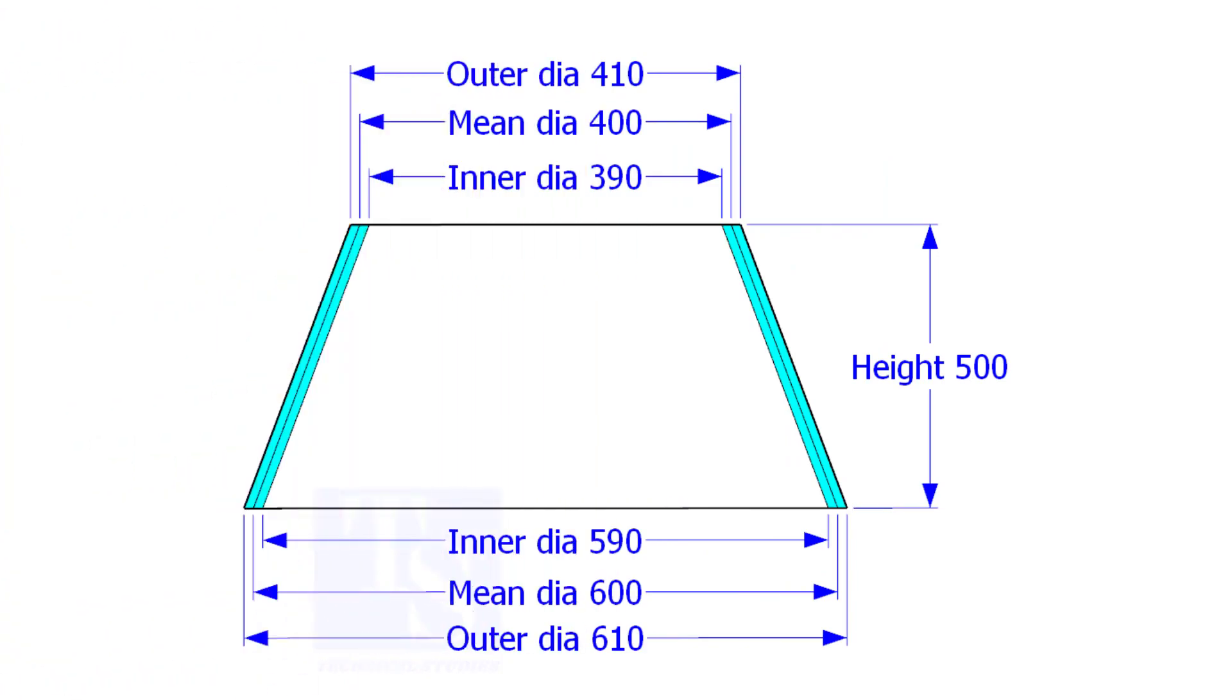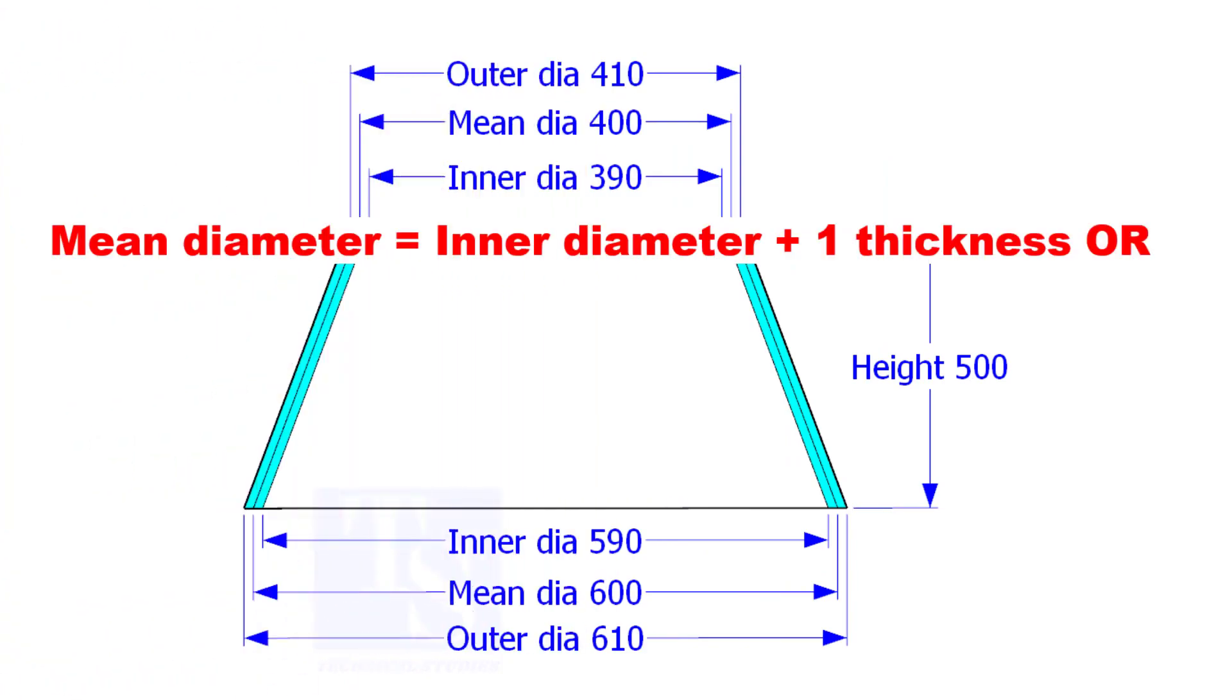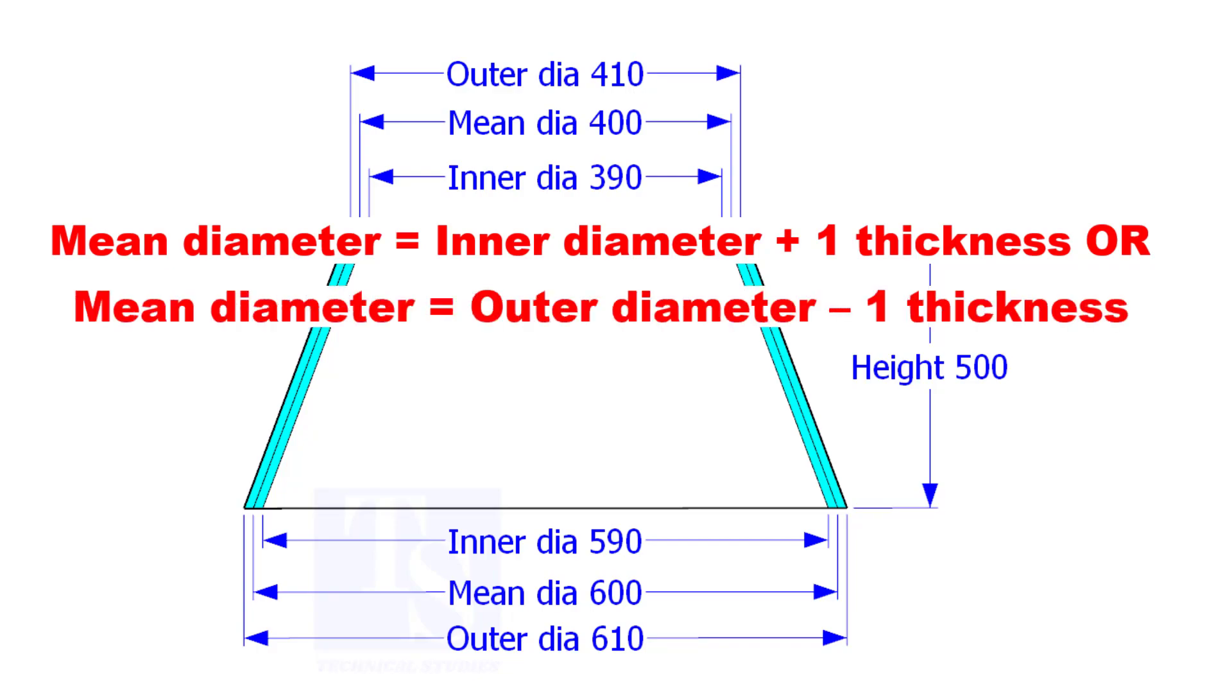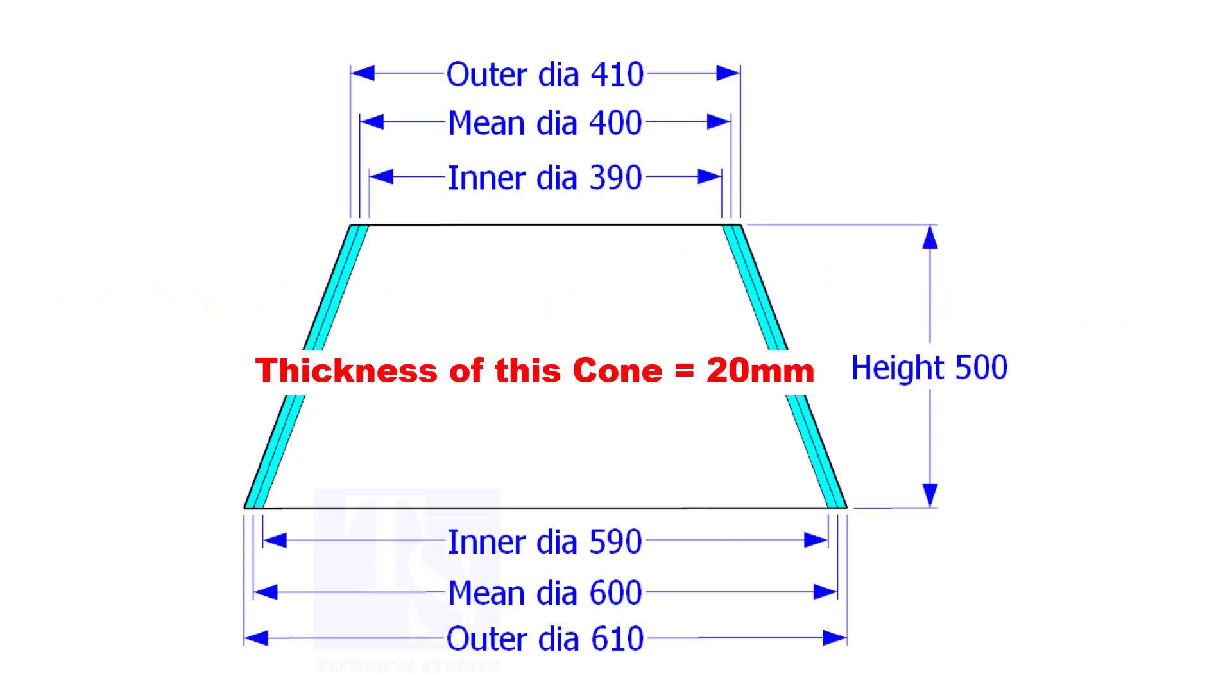Look at the cross section of the cone. What is the mean diameter? It is the center diameter of a circle or a sphere. For example, suppose the inner diameter is 1000 mm and the thickness of the cone is 20 mm, then the mean diameter shall be 1000 plus 20 equal to 1020 mm.